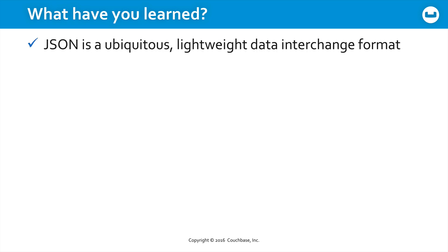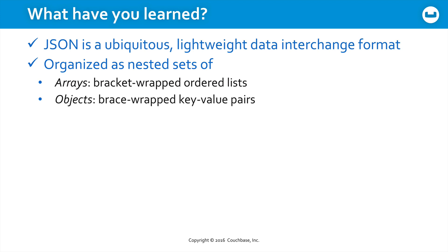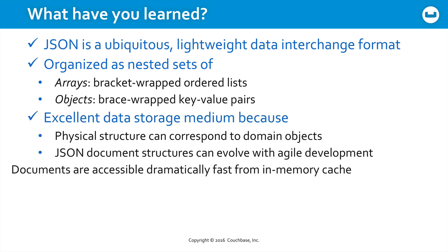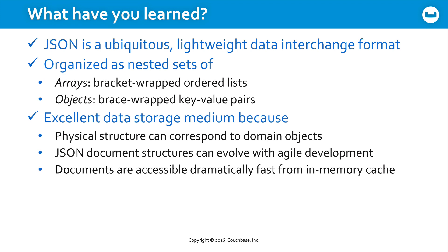So what have we learned here? First, JSON is a ubiquitous, lightweight data interchange format focused around arrays and objects, where an array is a bracket-wrapped ordered list and an object is a brace-wrapped key-value pair, all separated by commas — strings are single or double quoted, other values unquoted. You nest these one inside the next as necessary, which means JSON is an excellent data storage medium because the physical structure of your documents can correspond very closely to your domain objects, reducing impedance and making your code simpler to write and maintain. Because the documents are not locked into a rigid schema, you can evolve their structure over time as your software evolves.